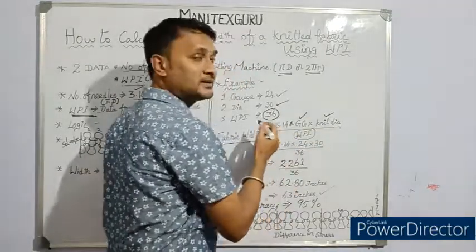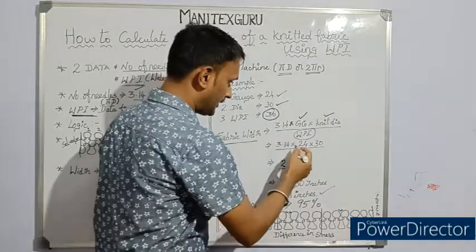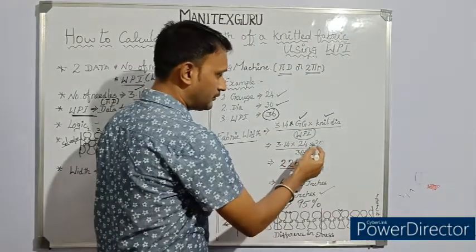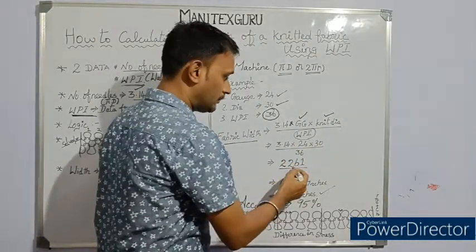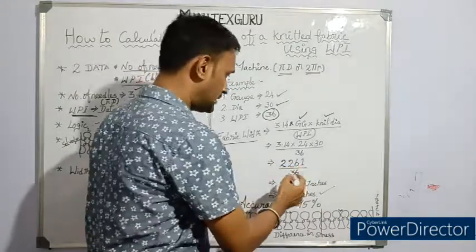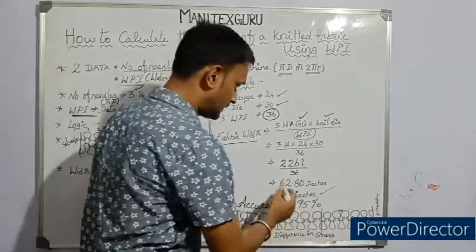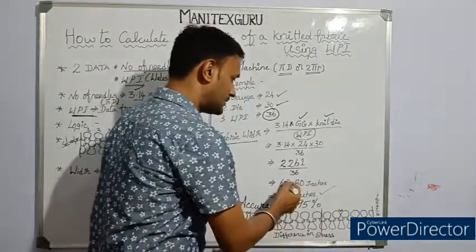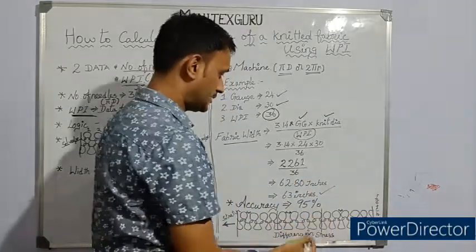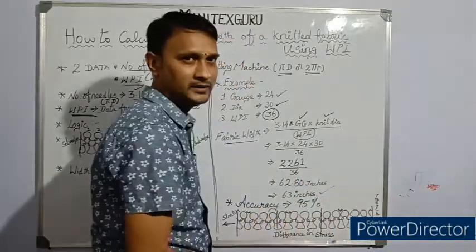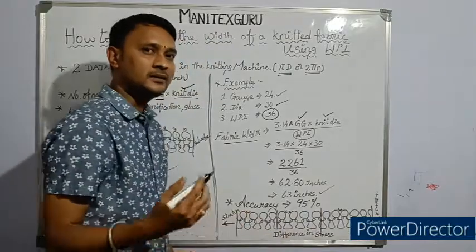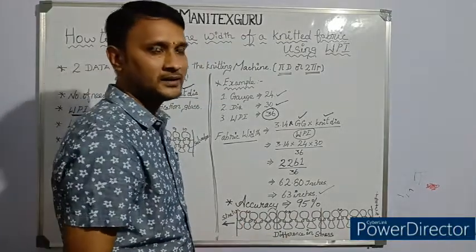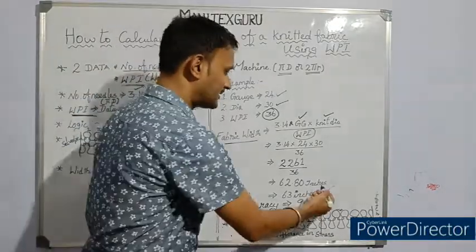3.14, gauge is 24, and knit dia is 30, divided by 36 which is the wales per inch. 3.14 into 24 into 30 is 2261 needles divided by 36. We got 62.80 inches, which is nothing but 63 inches. If we knit a 30s jersey fabric in 30 dia, we will get 63 inches.